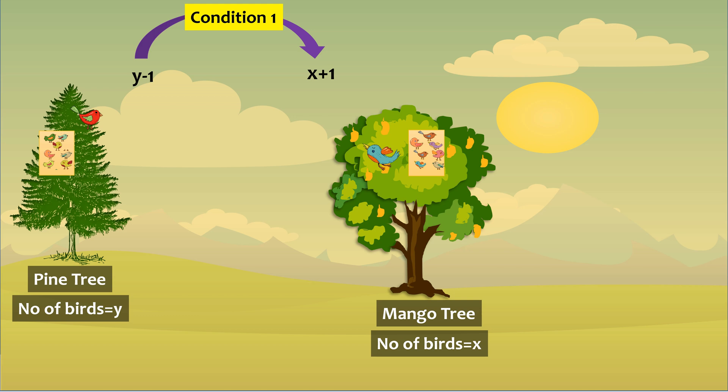As per the bird on the mango tree, the number of birds on the mango tree after this transaction will be equal to two times the remaining number of birds on the pine tree. This gives rise to the equation, x plus 1 equals to 2y minus 1. Let this be equation 1.